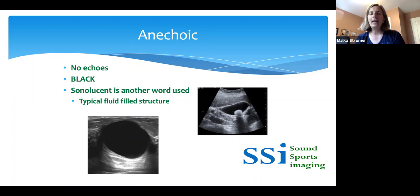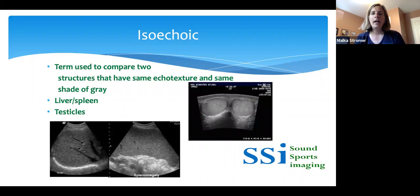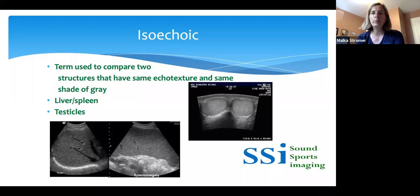Anechoic, as we recall, is lacking echoes, and therefore it is most commonly associated with something that is fluid-filled. We can see here with the cyst and the gallbladder that these are anechoic structures and they appear black on ultrasound. Isoechoic structures have the same echogenicity next to one another. Here's an example of two testicles within the scrotal sac — they both have the same echogenicity. We can also compare the liver and spleen, which often have very similar echogenicity and are isoechoic. Using a dual image, you can see both look quite similar — they're isoechoic.